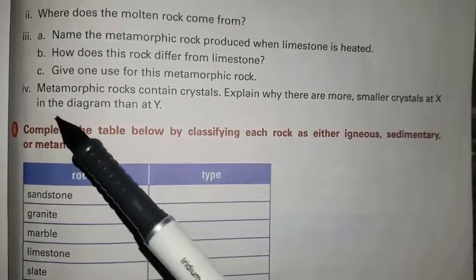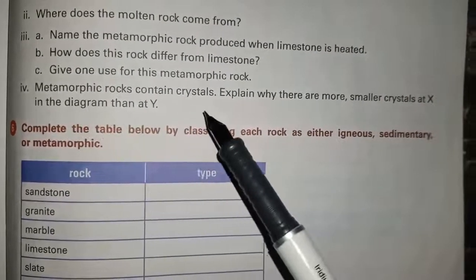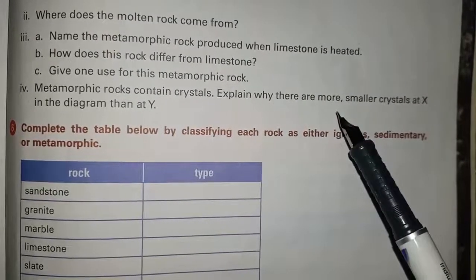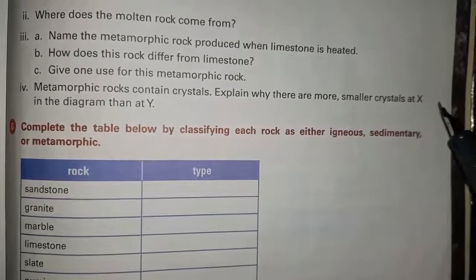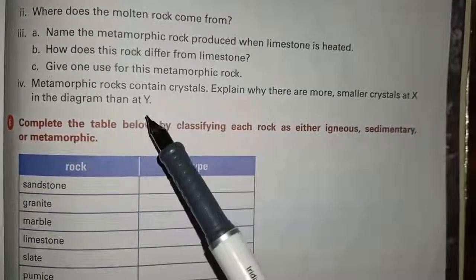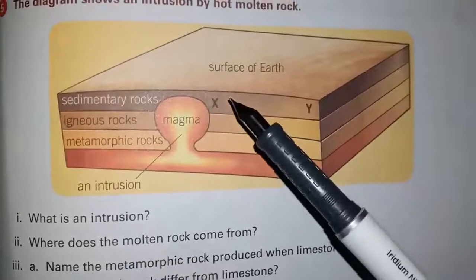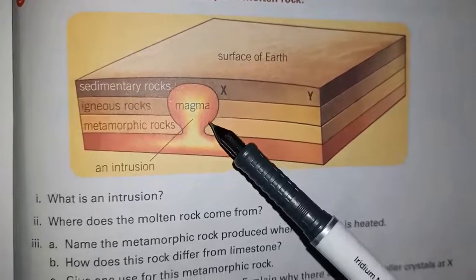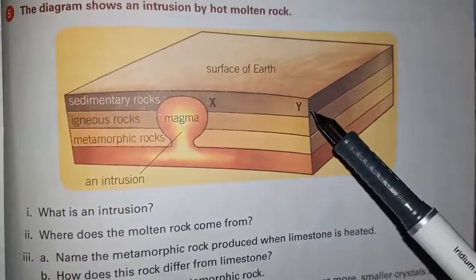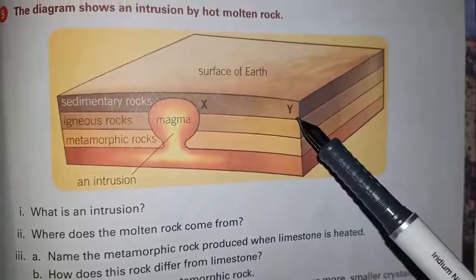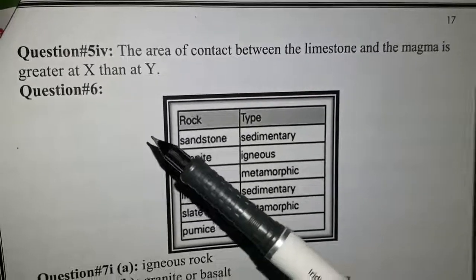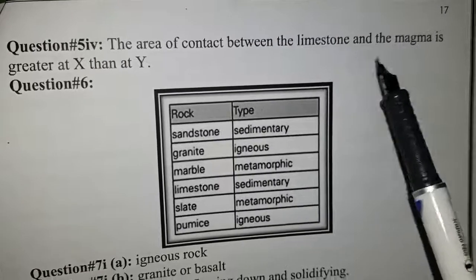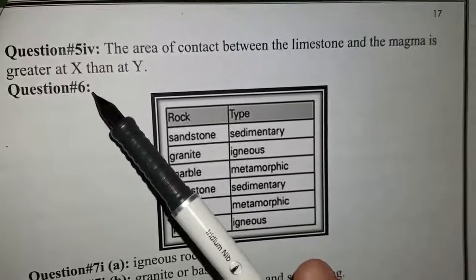Part 4: metamorphic rocks contain crystals. Explain why there are more smaller crystals at point X in the diagram than at point Y. Point X is closer to the intrusion of magma and point Y is away from the intrusion. The answer is: the area of contact between the limestone and magma is greater at X than at Y.